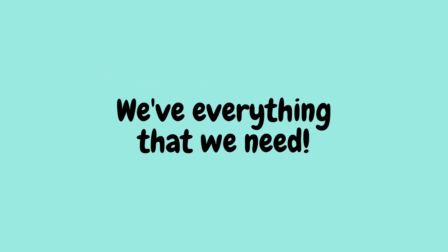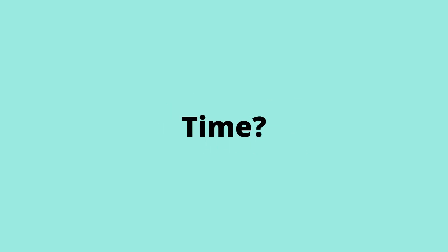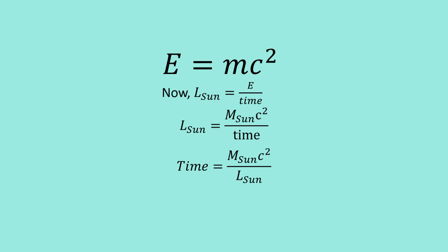Now that we have mostly everything, we may begin with our actual calculation. We are supposed to find time. We know the equation E equals mc squared. We also know that luminosity of the sun equals energy upon time, as luminosity basically is the power. In place of energy, we can substitute mass of the sun and the speed of light squared from Einstein's equation. Furthermore, isolating time, we get mass of the sun times the speed of light squared divided by the luminosity of the sun.